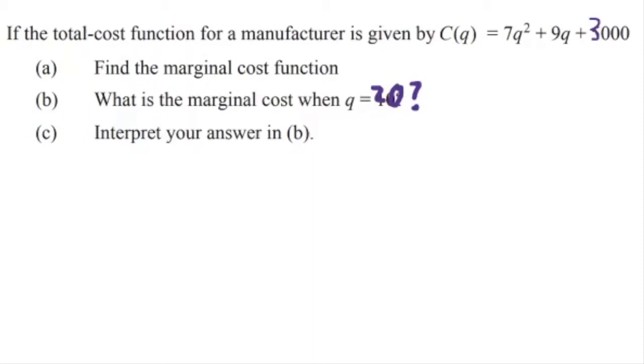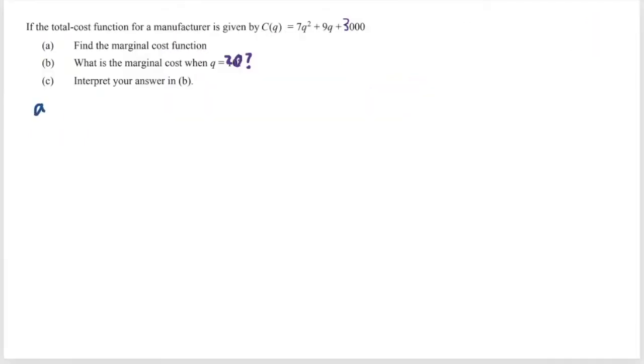Let's start with part A where we find the marginal cost function. To find the marginal cost function, I need to differentiate. So once you differentiate, this represents the marginal cost, which is C prime. Differentiating 7Q squared gives me 14Q because it's 2 times 7, which is 14, and subtract 1 from the power. Differentiating 9Q gives 9, and differentiating 3000 gives 0. So C prime equals 14Q plus 9 represents the marginal cost function.